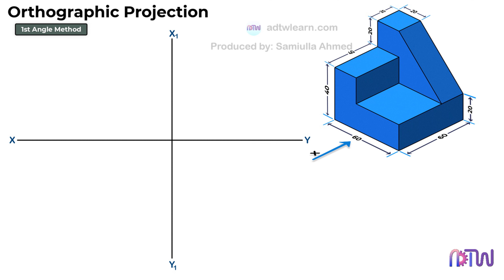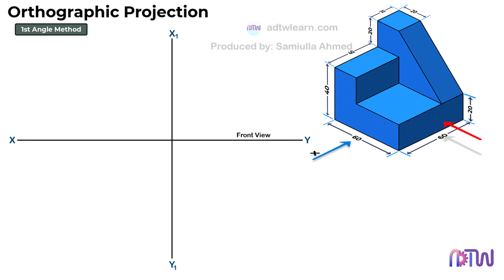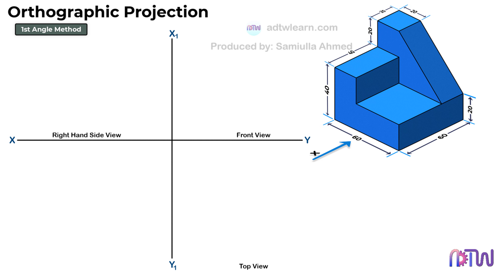In this example, the viewing direction is given from this side. Therefore, whatever portion of the object is visible while looking from this side will be the front view, and it will be drawn above the xy line. Whatever view is visible from the right-hand side will be the right-hand side view, drawn on the left-hand side of the front view. The top view is always below the xy line in the first angle method. Let's start drawing.